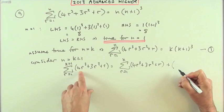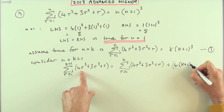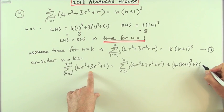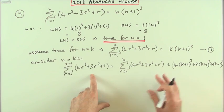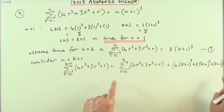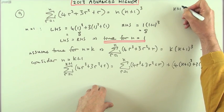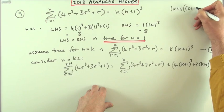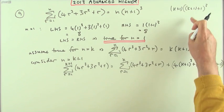The k plus 1 term will be this expression with k plus 1 replacing it, so that will be 4(k+1)³ plus 3(k+1)² plus (k+1). One thing I know here is I know what I'm aiming for. I'm aiming for this expression to end up looking like (k+1) times (k+2)³.